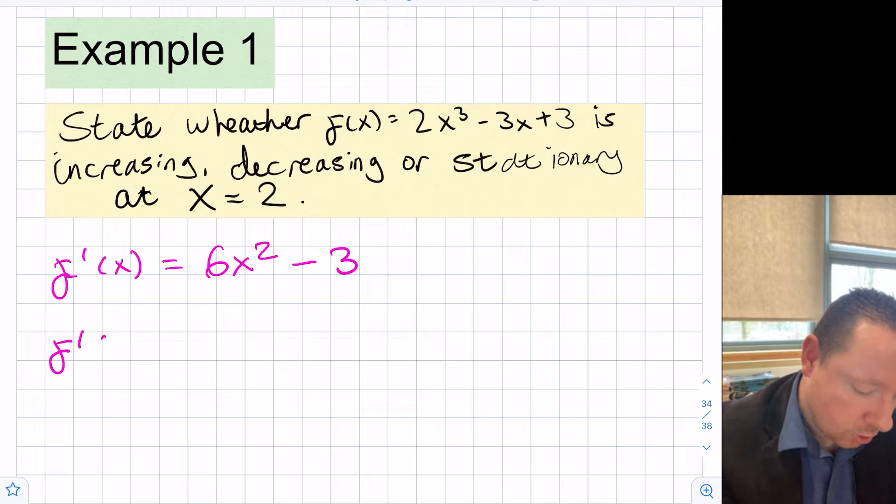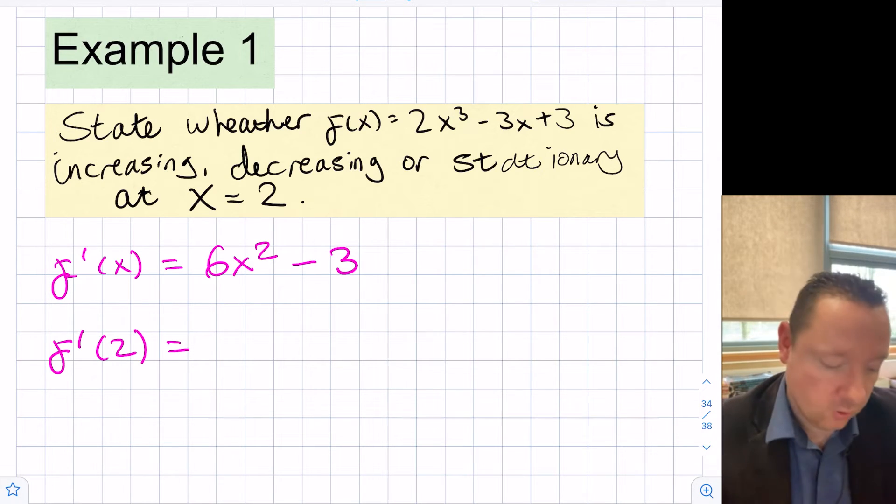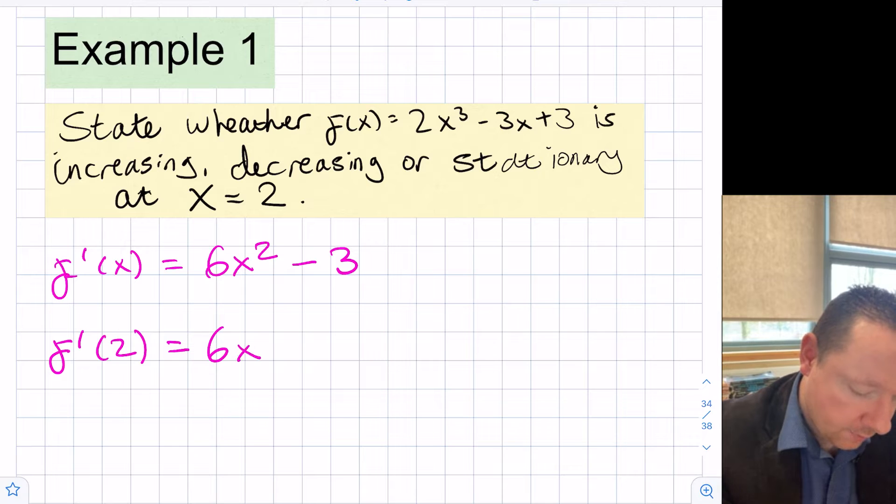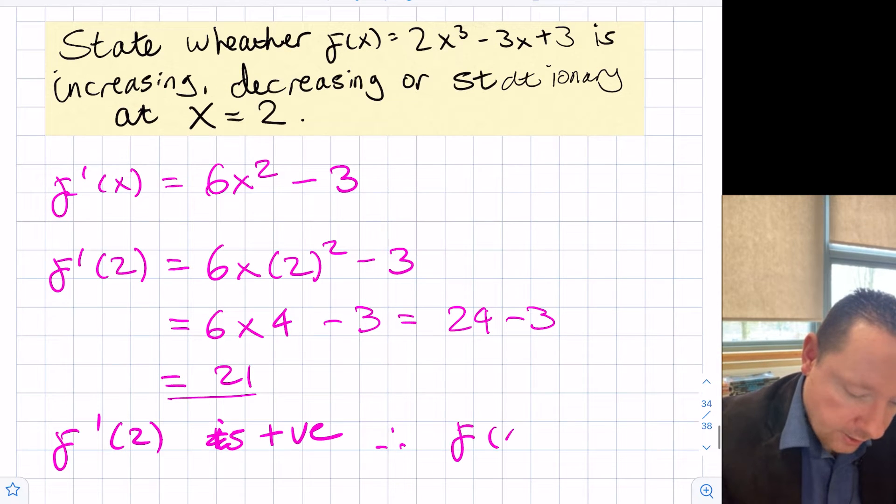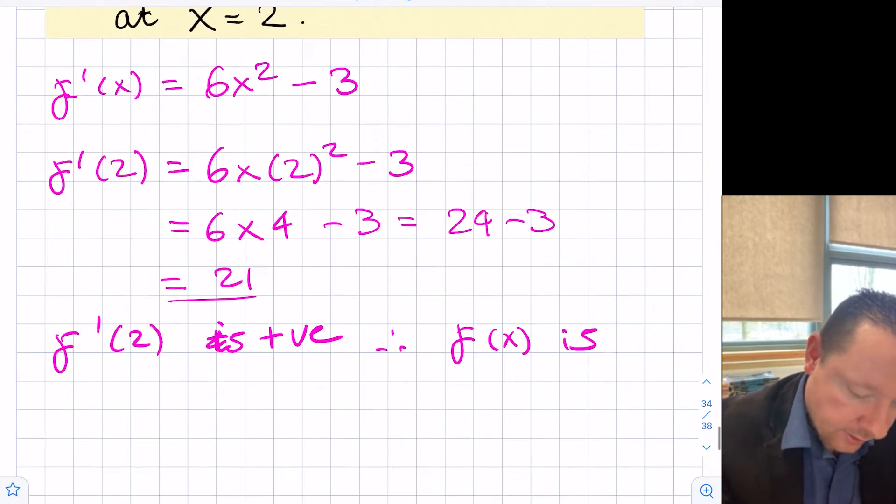So all we need to work out is substituting 2 in to see if that is positive, negative or zero. So that's 6 times 2 squared minus 3, which is 6 times 4 minus 3, 24 minus 3, which equals 21. F dash 2 is positive. Therefore f of x is increasing at x equal to 2.